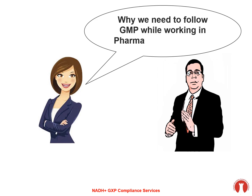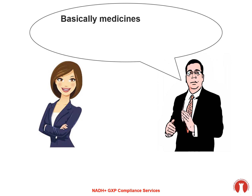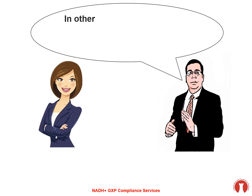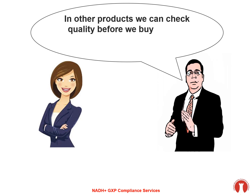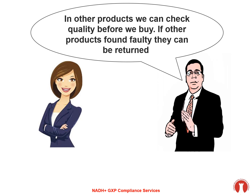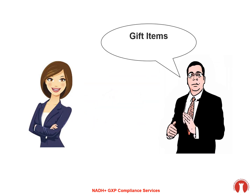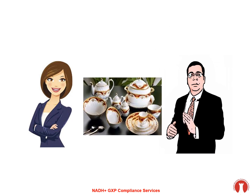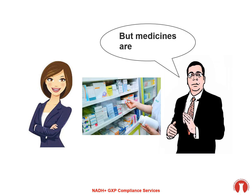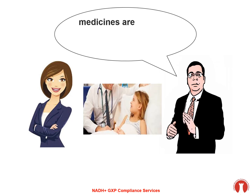Basically, medicines are different from other manufactured products. In other products, we can check quality before we buy, and if other products are found faulty they can be returned — for example, clothes, gift items, crockery items, etc. But medicines are different.